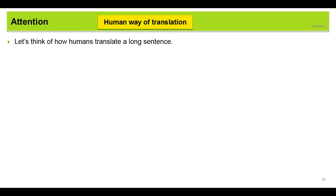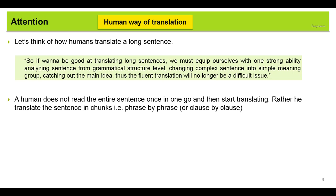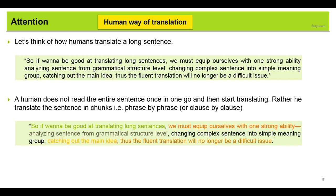Now let's see how a human translates a long sentence. If you are given this long sentence, a human doesn't read the entire sentence once in one go and then start translating. Rather, he'll translate the sentence in chunks, like phrase by phrase or clause by clause, like this. So we'll apply the same approach for machine translation and call it the attention mechanism.